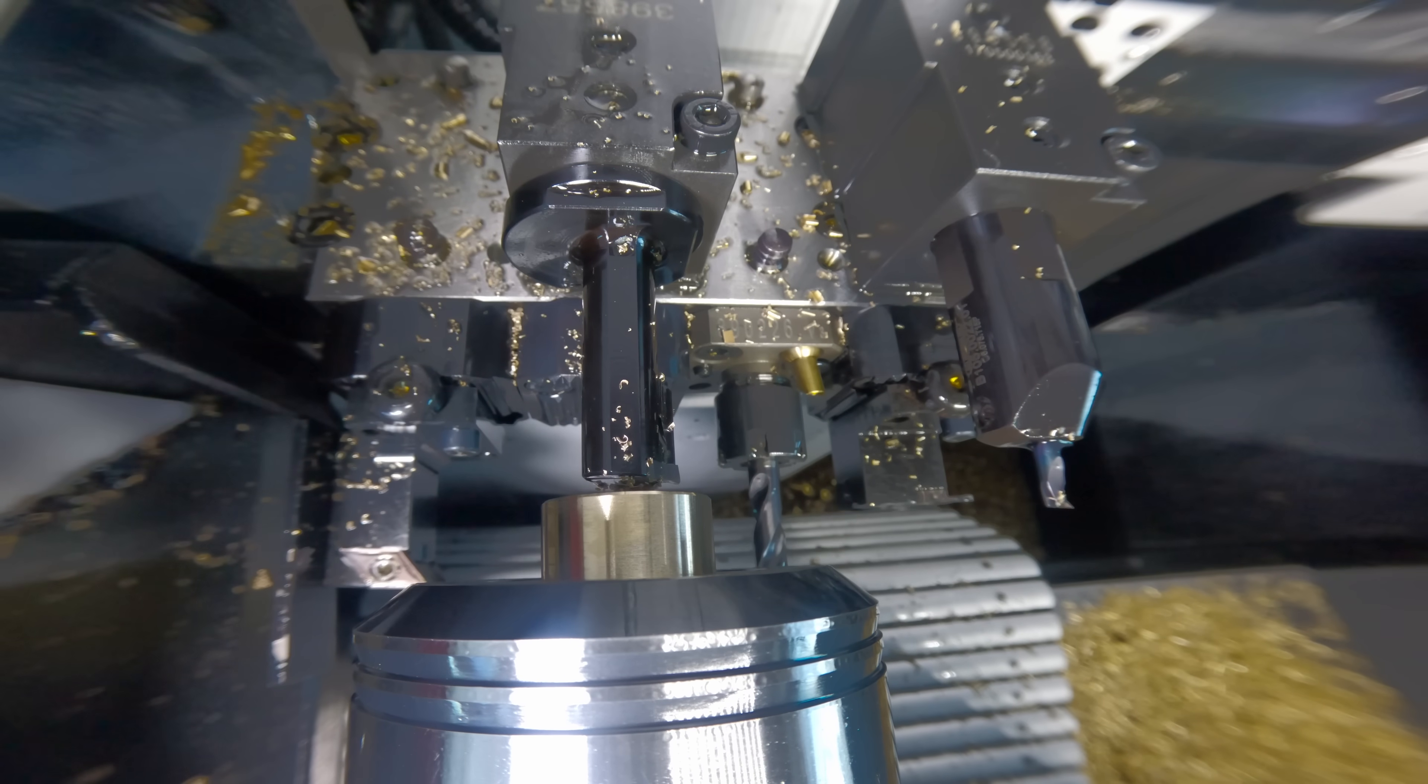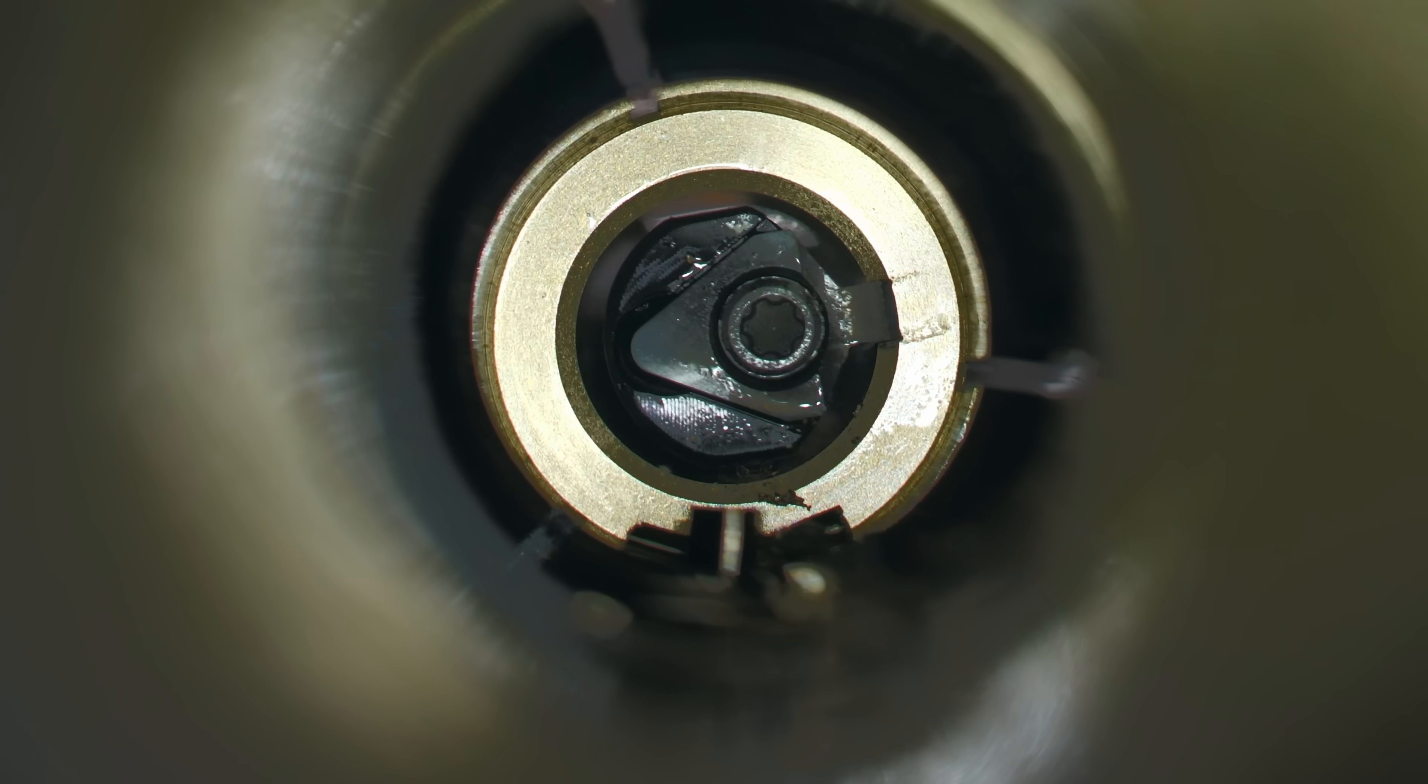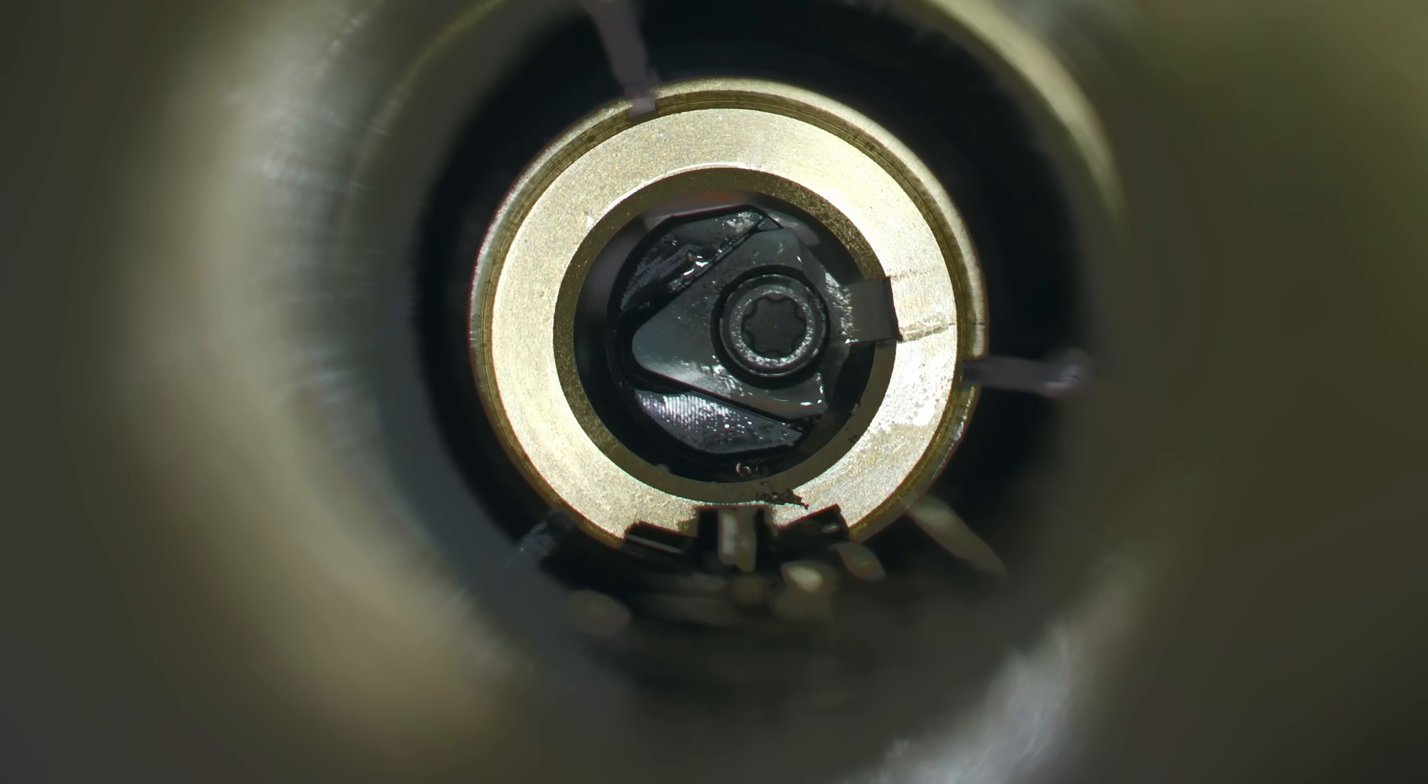What you are watching is called internal keyway broaching. To show you a better view, we actually filmed through our spindle so you can see every single pass slowly peel off stock to create the perfect key shape.